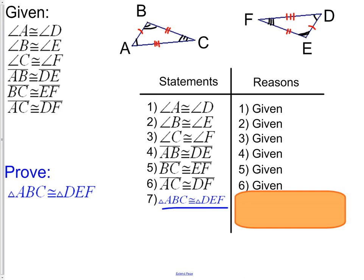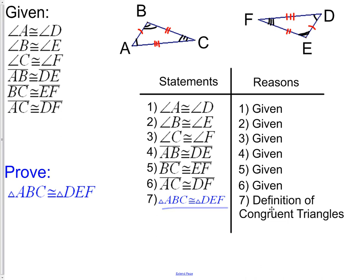The reason that we know that these things are congruent, or that the two triangles are congruent, is because of the definition of congruent triangles. To be a congruent triangle, all angles and all sides must be congruent. That is the exact situation we have, and our proof is done.